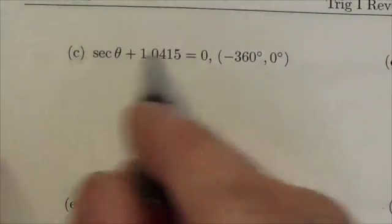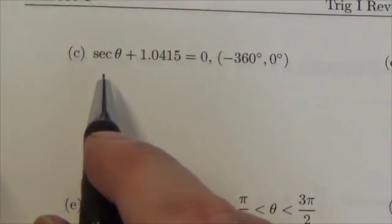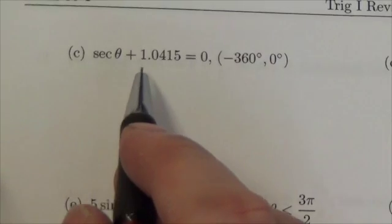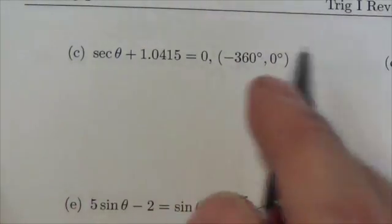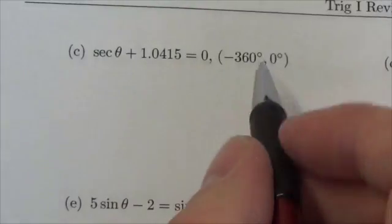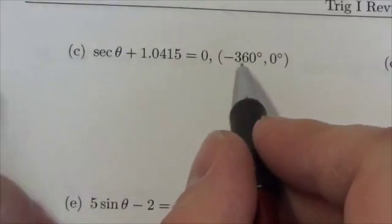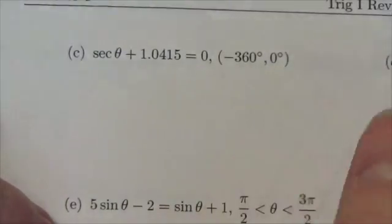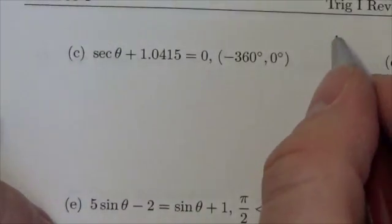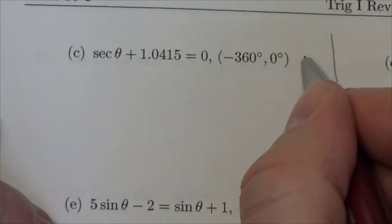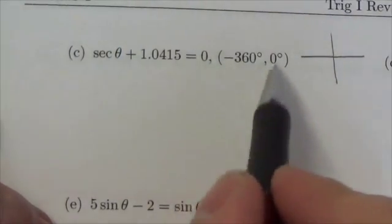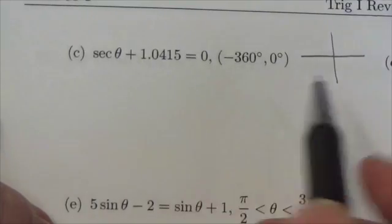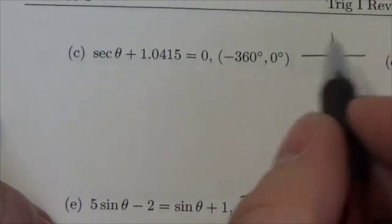In this question we're being asked to solve this equation: the secant of theta plus 1.0415 is equal to zero. We're given the domain from negative 360 to zero, not including either endpoint. It helps to think about what this domain is indicating.